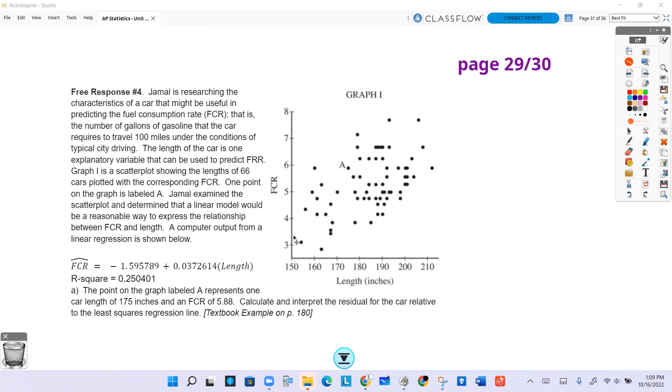Jamal examined the scatter plot and determined that a linear model would be a reasonable way to express the relationship between FCR and length. A computer output from a linear regression is shown below. It's got R squared, pretty small, and here is your equation.